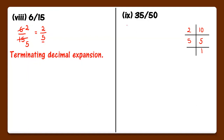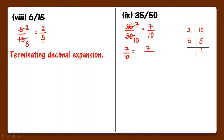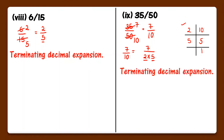9th part: 35 upon 50. Dividing both by 5 gives 7 upon 10. Now we do the prime factorization of 10. We can write 10 as 2 into 5. Now we have both 2 and 5 in the denominator, so it has terminating decimal expansion.